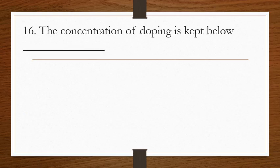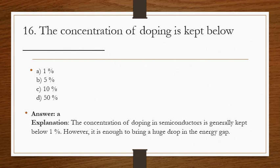Question 16: the concentration of doping is kept below what value? The answer is A. The concentration of doping in semiconductors is generally below 1%. However, it is enough to bring about a huge drop in the energy.